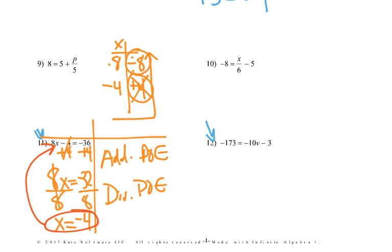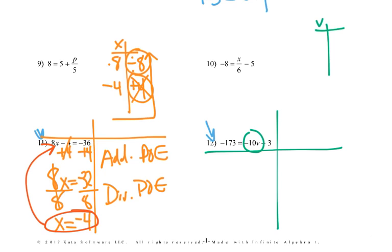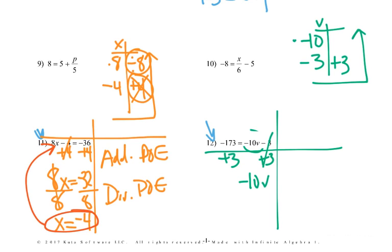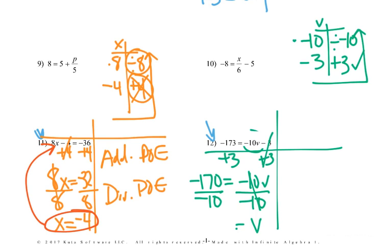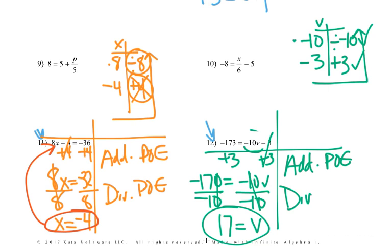Number 12: what's happening to V? First times by negative 10, then subtract 3. Going backwards, opposite of subtracting 3 is adding 3. I add 3 to both sides, giving negative 10V equals negative 170. Then divide by negative 10 — division property of equality. Negative 170 divided by negative 10 gives positive 17. So V equals 17. Addition property of equality allowed the first step; division property of equality allowed the second.